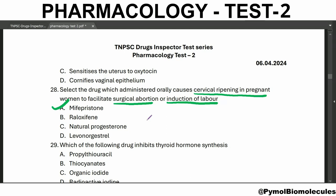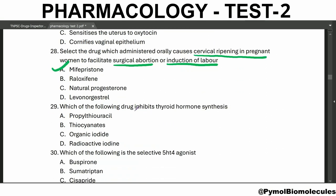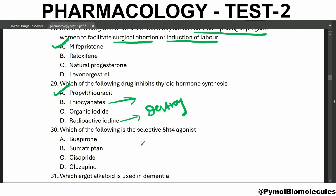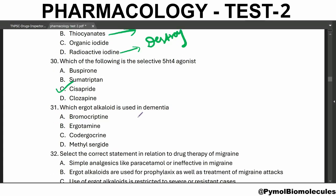Mifepristone can also be used as a single-dose post-coital contraceptive. Which of the following drugs inhibits thyroid hormone synthesis? Propylthiouracil and thiocyanates inhibit iodide trapping. Organic iodide inhibits hormone release, and radioactive iodine destroys the thyroid tissue.